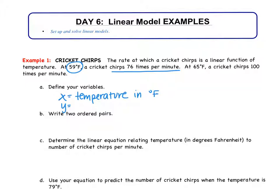For Y, please do not just write cricket chirps. We need to be more specific. What should I write instead of just cricket chirps? Number of cricket chirps. And I'm going to put per minute.